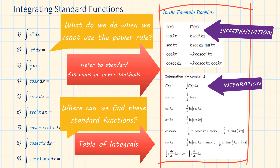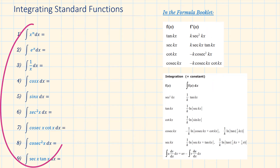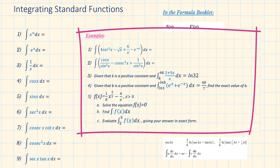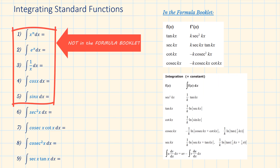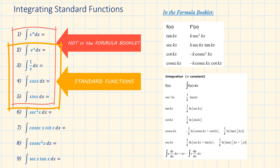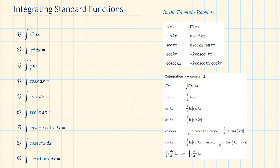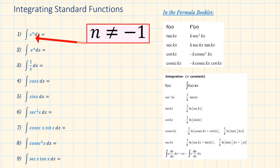Knowing that integration is opposite to differentiation, you have to refer to both tables. After we go through questions 1 to 9 covering the basics, we will look at more complex examples. The questions will become more and more challenging, especially the last one. Questions 1 to 5 are not in the formula booklet, but we have to know them. Questions 2 to 5 are standard functions. For question 1, we simply use the power rule, where the power n is not equal to minus 1 — that is a special standard function covered in question 3.